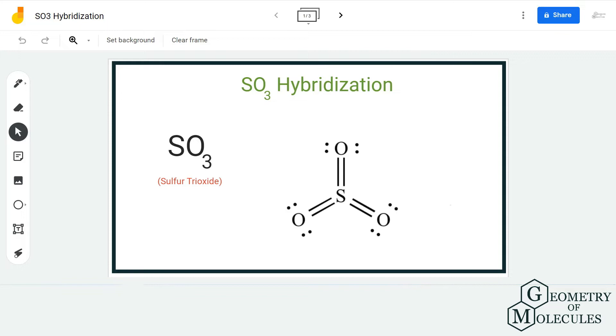Hi guys, welcome back to our channel. In today's video, we are going to help determine the hybridization of SO3 molecule, the chemical formula for sulfur trioxide. To find out its hybridization, we are going to find out the steric number of the central atom. Here, sulfur atom is forming bonds with three oxygen atoms.